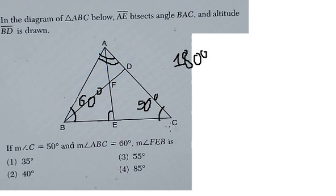We have 180 degrees. We need to minus 60 degrees and 50 degrees, and you have 70 degrees.